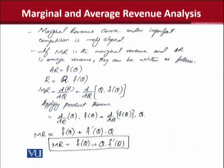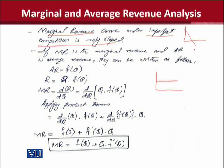As we have assumed, the marginal revenue curve in any imperfect competition is negatively sloped. We have observed that in perfect competition the marginal revenue slope is a straight horizontal line, whereas we are talking about the marginal revenue curve in the imperfect market or in the imperfectly competitive market.